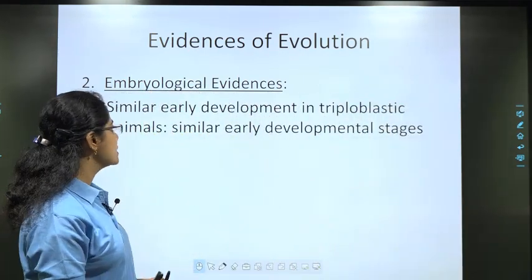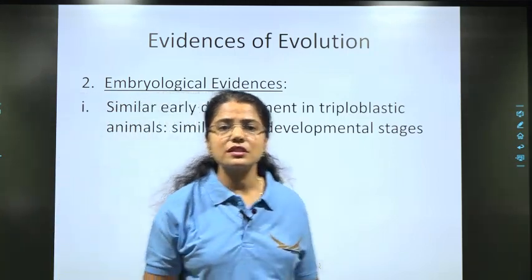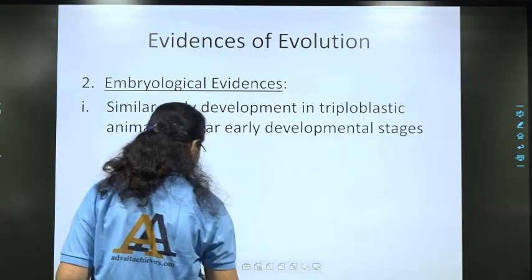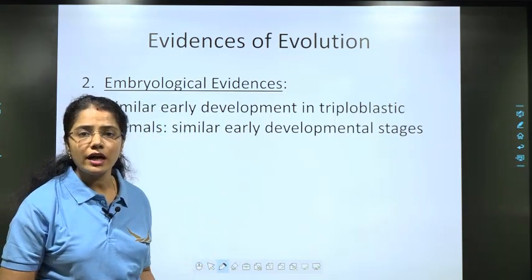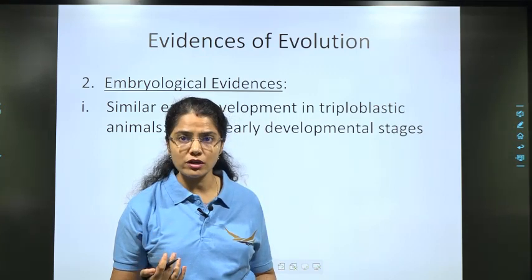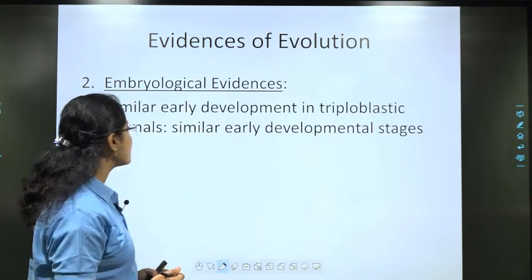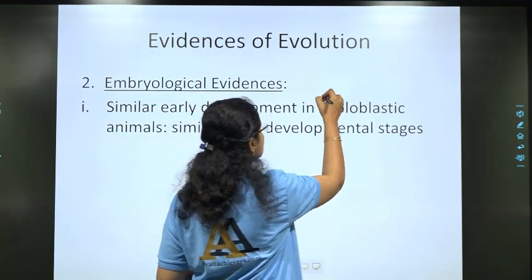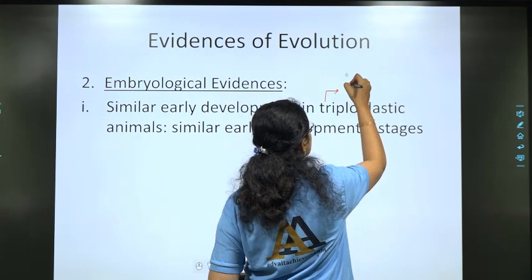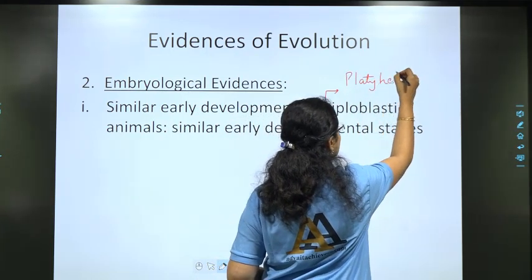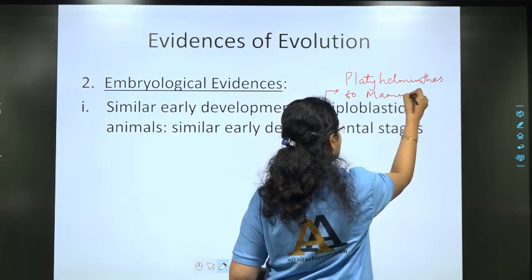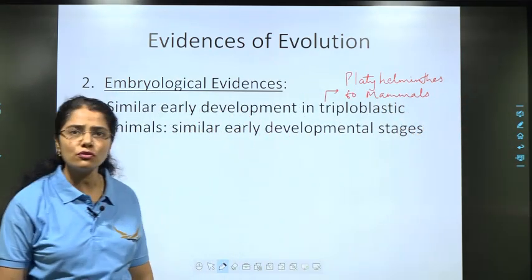What does 'similar early developmental stages' mean? When I am talking about triploblastic animals, I mean those which have three layers inside — ectoderm, mesoderm, and endoderm. These triploblastic animals range from platyhelminths to mammals. All of these animals show similar early developmental stages.